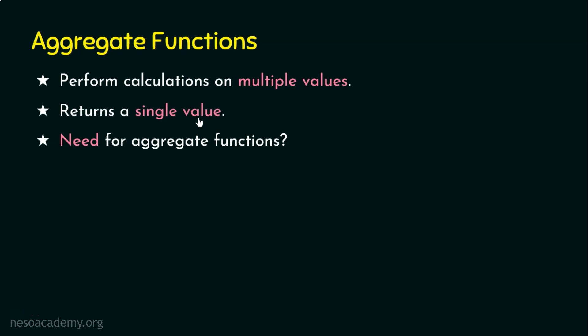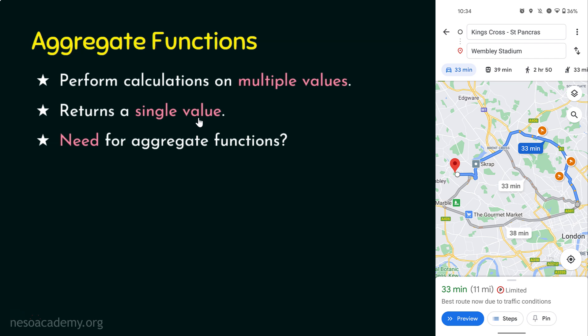I'll give you two different scenarios. When we are using Google Maps and we have set our source and destination and we are traveling, we can notice the estimated time — the ETA — to reach the destination. How is this estimated time calculated? The Google Maps server collects data from various sources, aggregates all the values, and later provides us with a single ETA value. So, the single ETA value is not decided based on one value — a group of values are taken and Google Maps server performs calculations on these group of values and provides us a single ETA value.